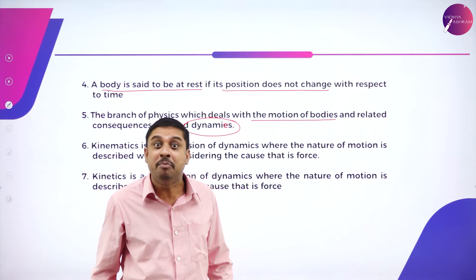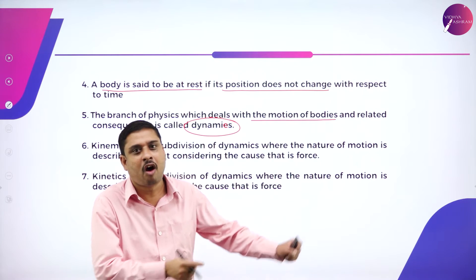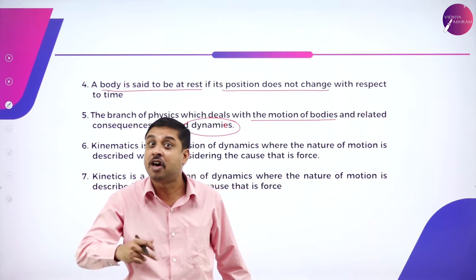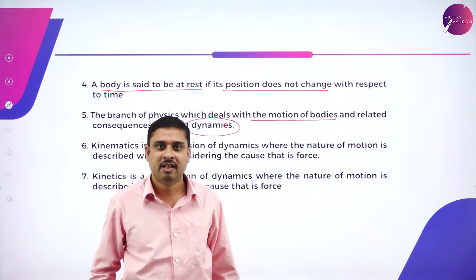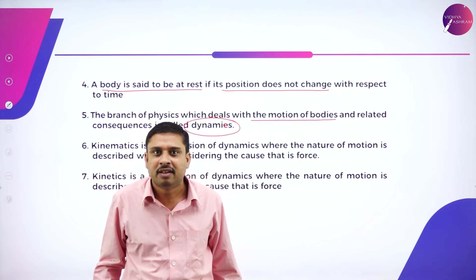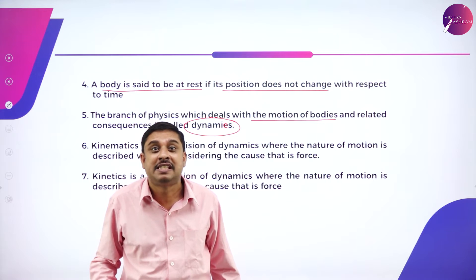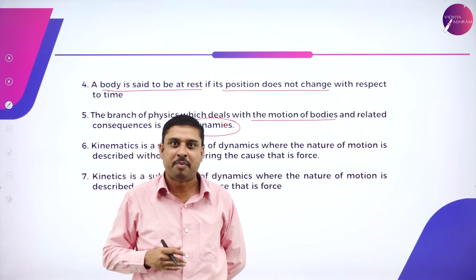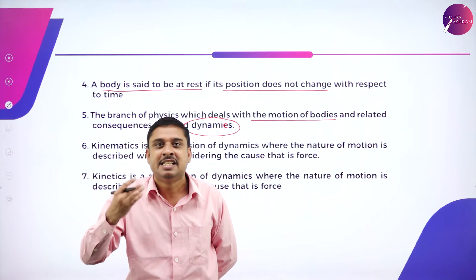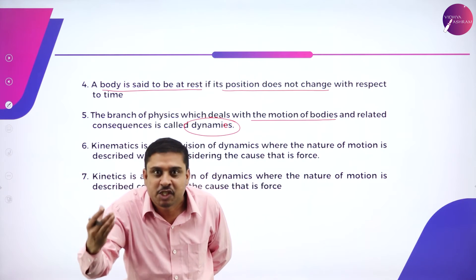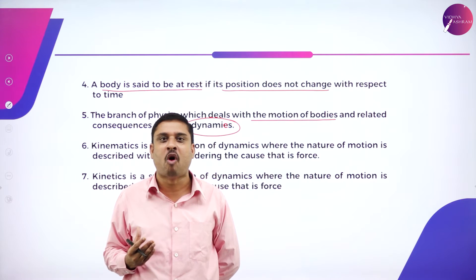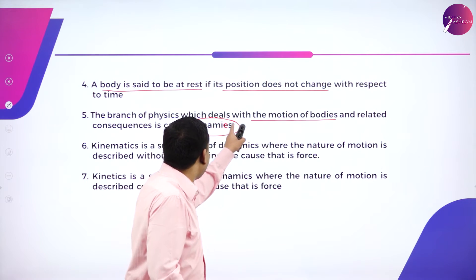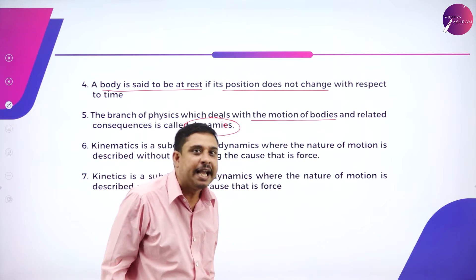Kohli is called a dynamic player because he is known for quick running, throws, and instant batting — not for simply standing in the ground. So the branch of physics that explains motion of bodies covers topics like speed, velocity, acceleration, and momentum of a moving body. All these topics are covered under a branch called dynamics.